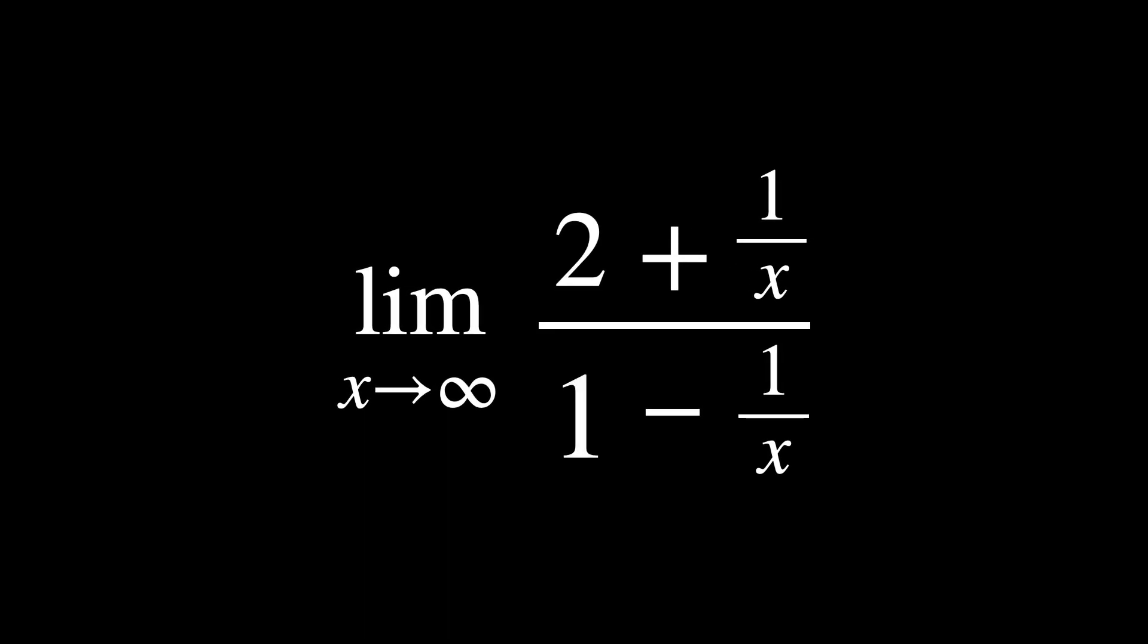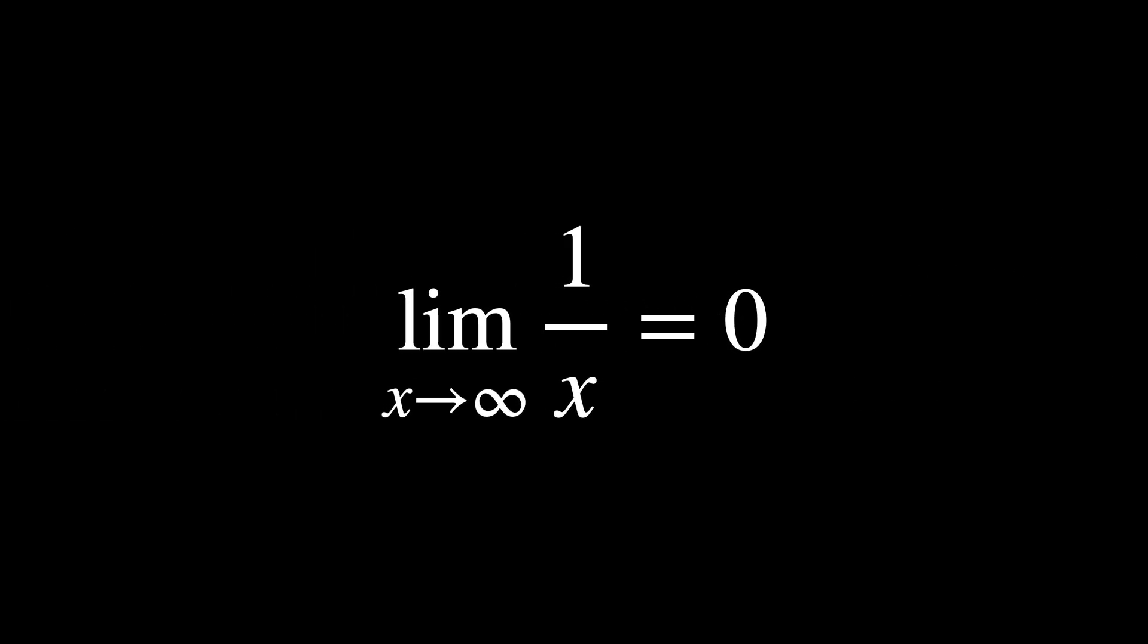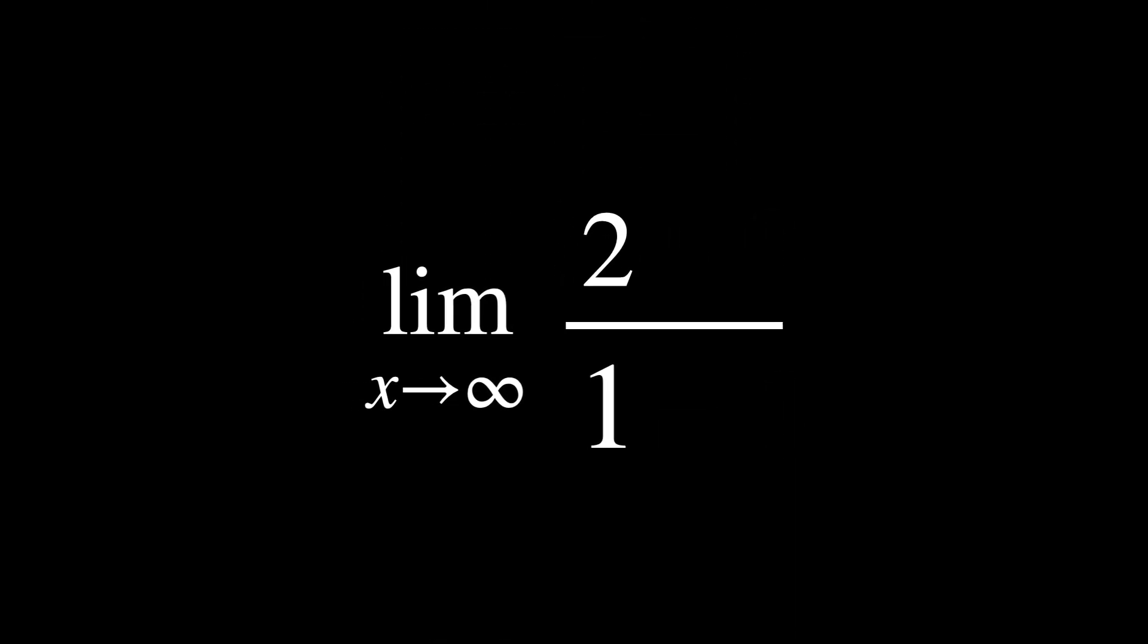We need to simplify the expression by dividing x from top and bottom. Remember, since x tends towards infinity, the x becomes infinity. So one over infinity is the same as saying zero, which is more accurately expressed as the limit of one over x as x goes to infinity is zero. Anyway, since two plus zero is two and one minus zero is one, the answer is two.